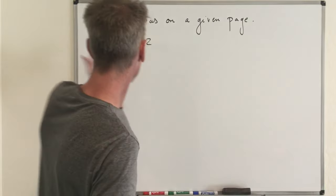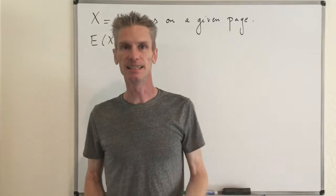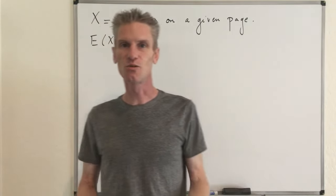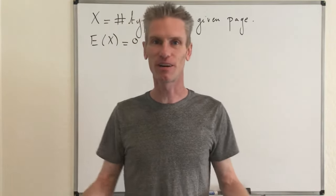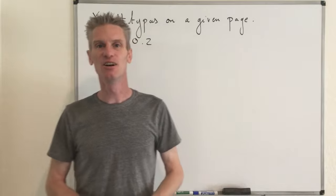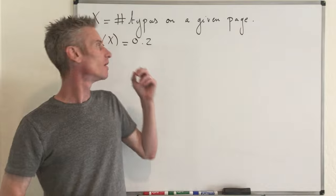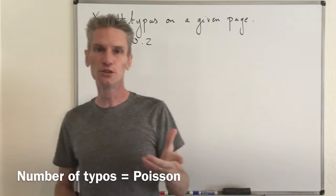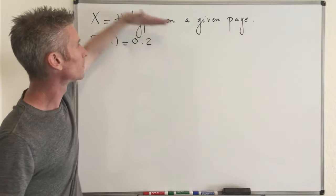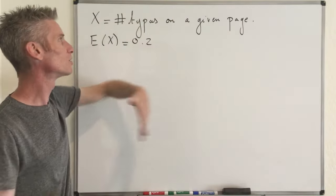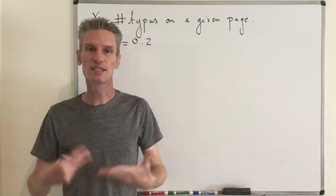The point is that we only know the expected value of X, but we cannot fully determine which kind of random variable X should be — there are many random variables with this expected value. The key thing to know is that we need to use the Poisson random variable. It turns out that the number of typos on a given page of a book is going to be a Poisson random variable.